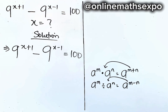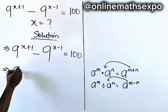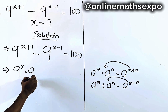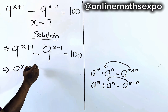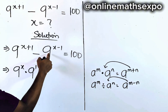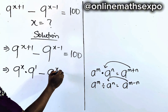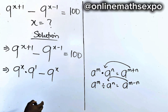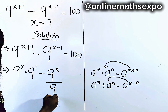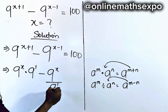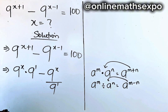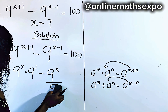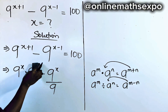Let's do that together. We're going to have 9 to the power of x multiplied by 9 to the power of 1, minus 9 to the power of x divided by 9 to the power of 1. And for everything raised to the power of 1, it's still the same number, so we are free to take this one off.